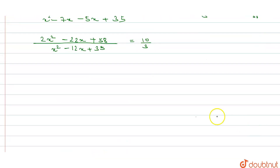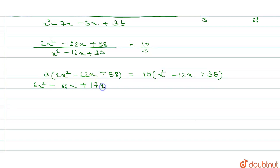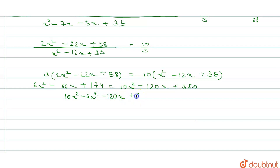So here we do cross multiplication: 3 into 2x squared minus 22x plus 58 equals 10 into x squared minus 12x plus 35. This gives 6x squared minus 66x plus 174 equals 10x squared minus 120x plus 350. Rearranging: 10x squared minus 6x squared minus 120x plus 66x plus 350 minus 174 equals 0.